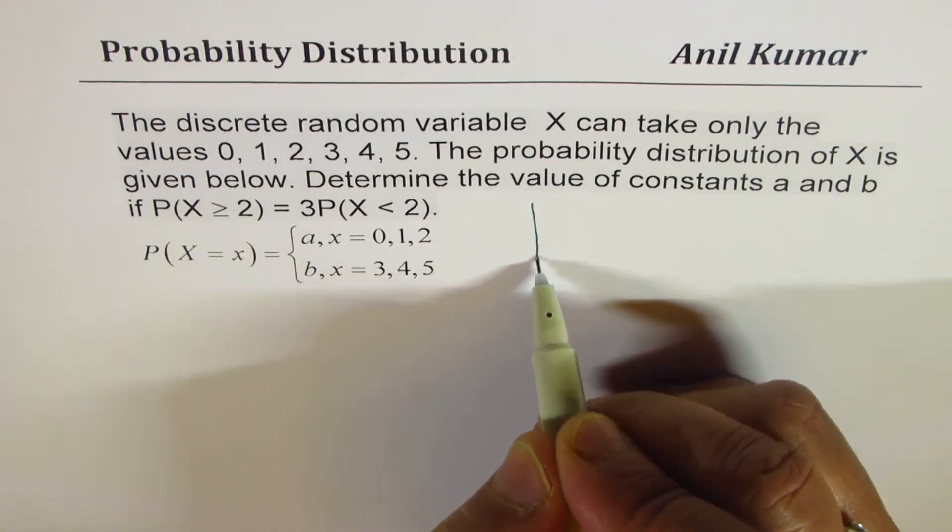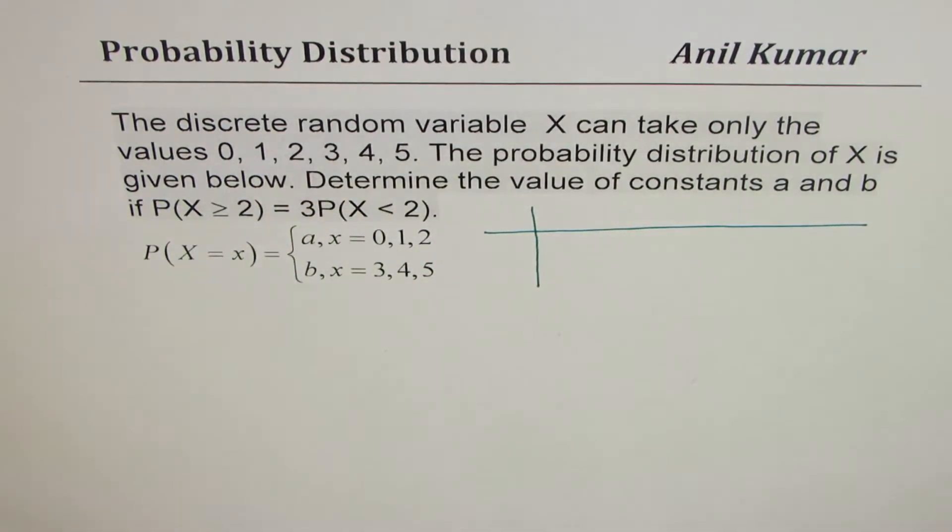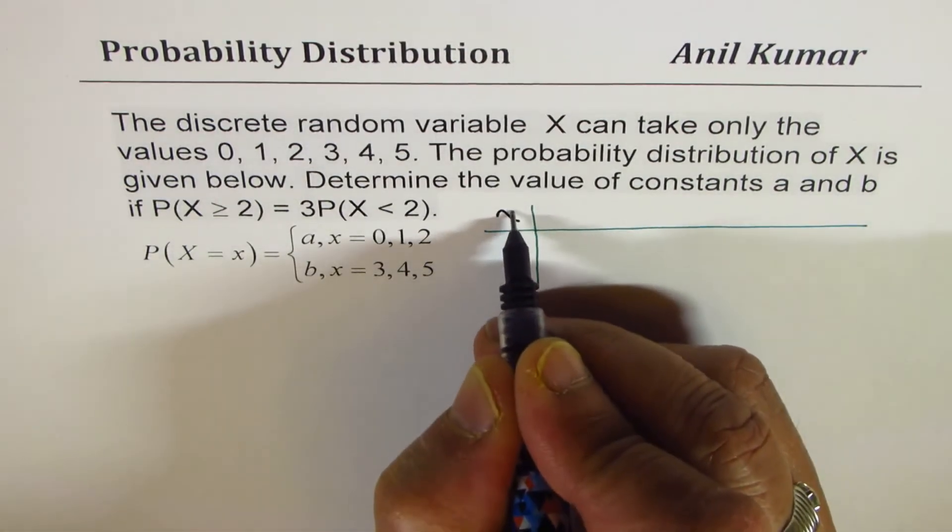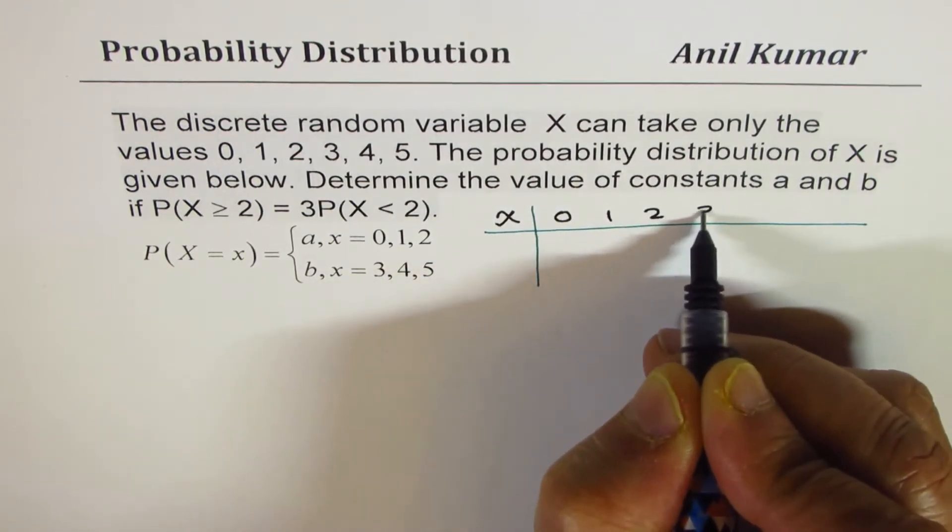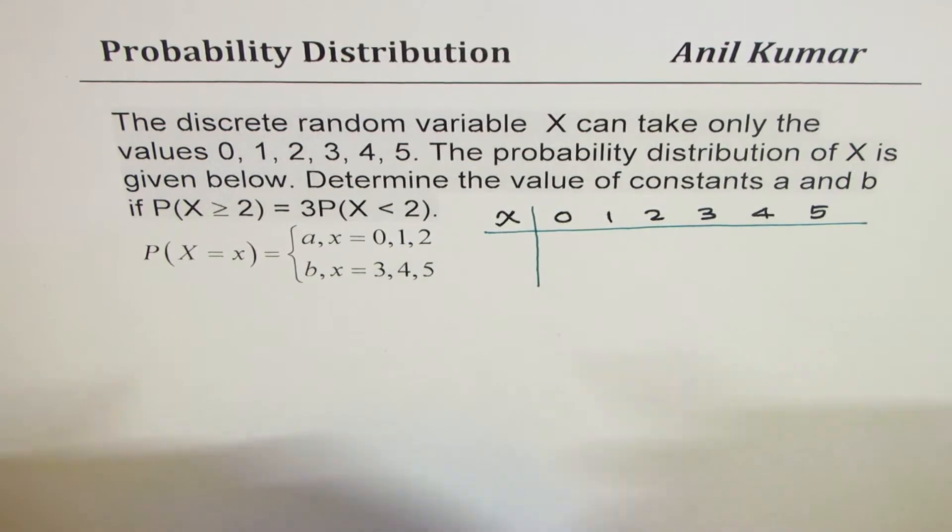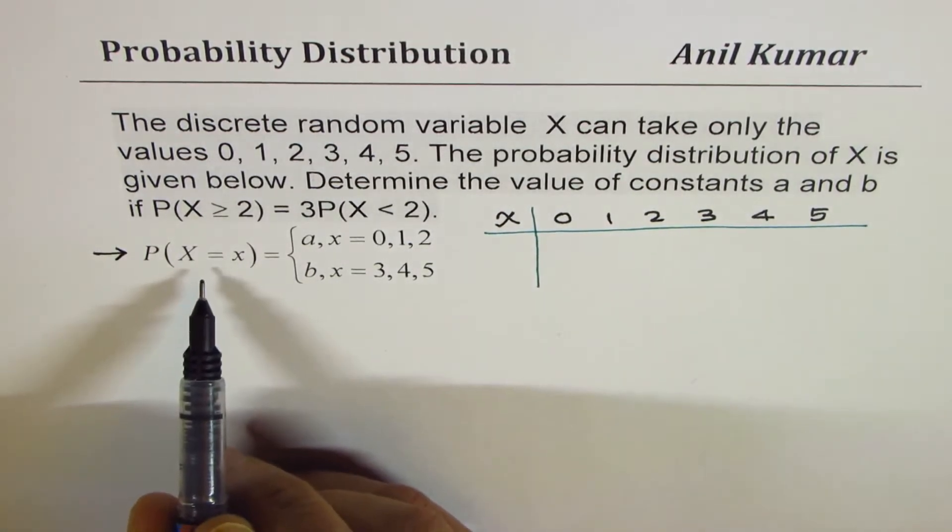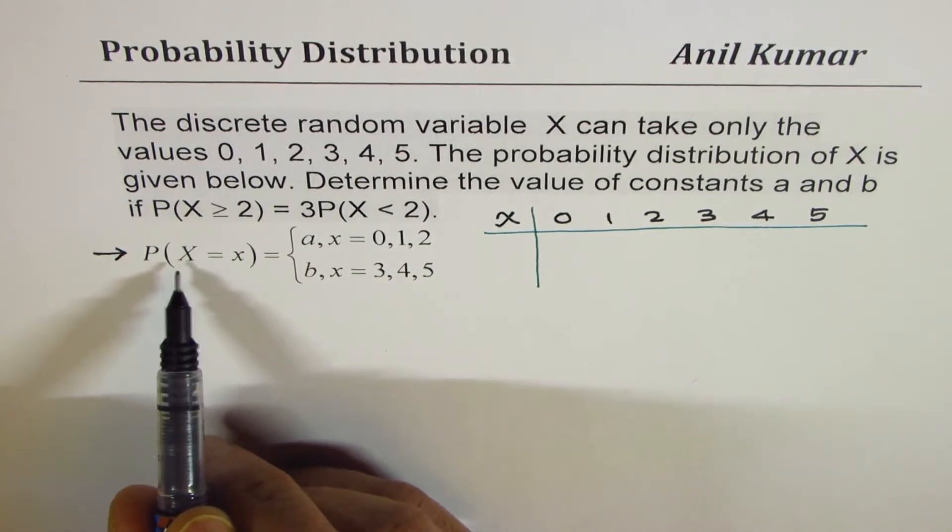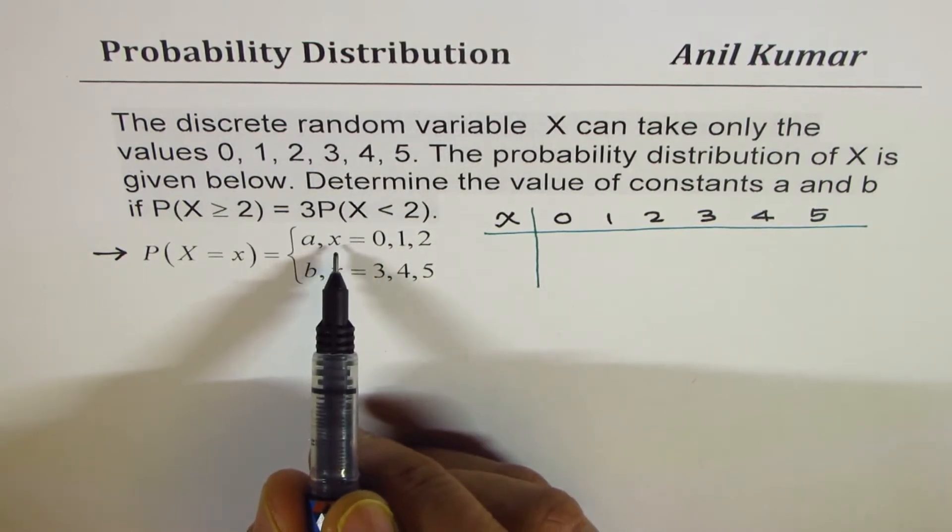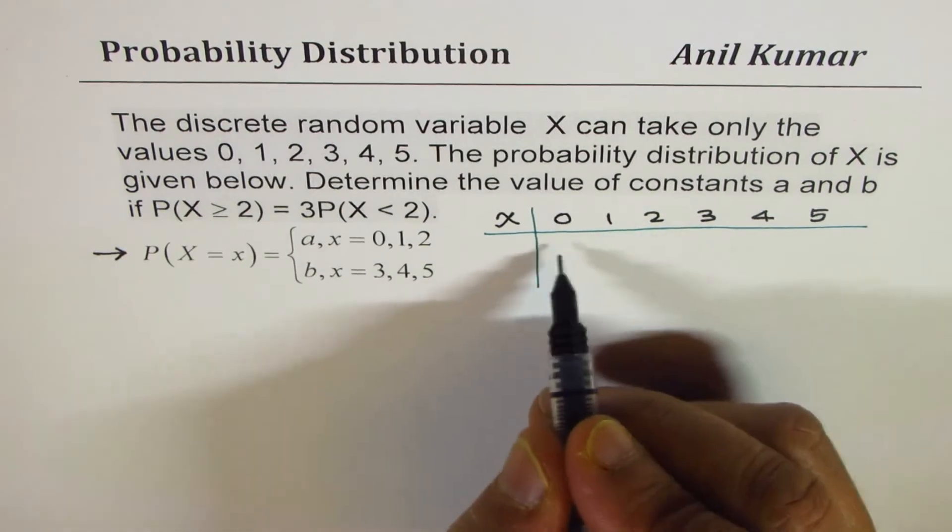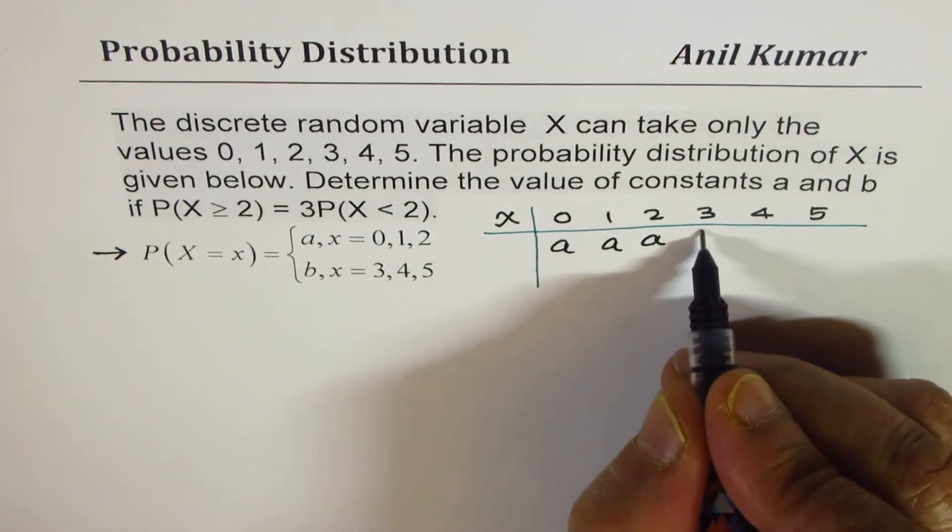So here we are given the values of X could be one of these six. We can write this down as the values for X could be 0, 1, 2, 3, 4, or 5. Now the expression here gives you the probability distribution. For X equals 0, 1, and 2, the probability is a.